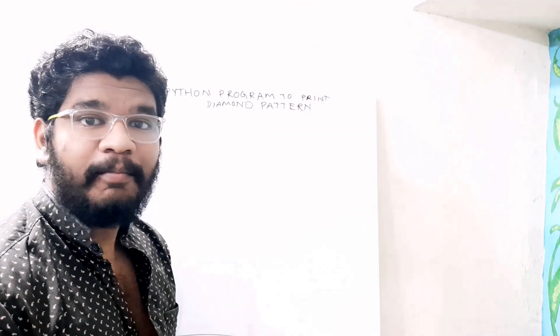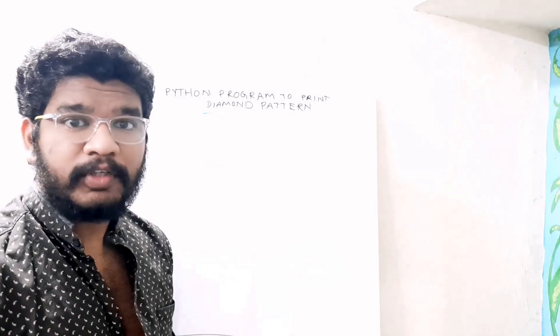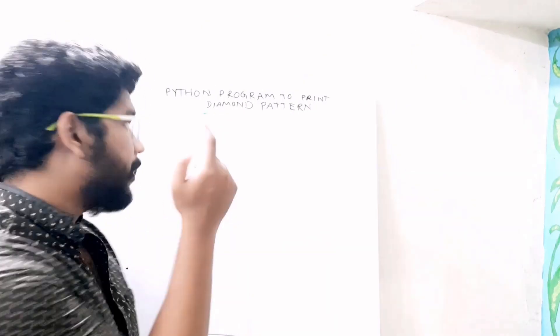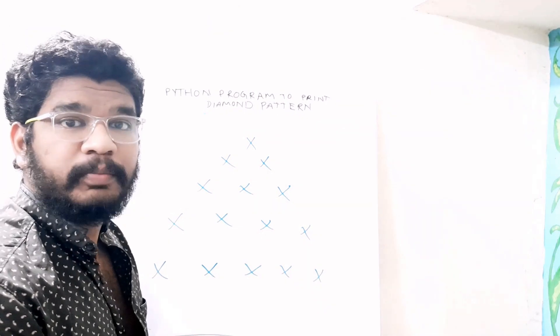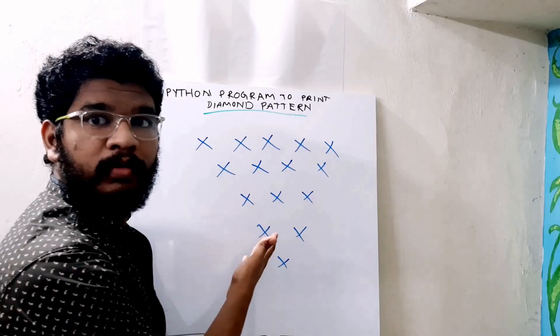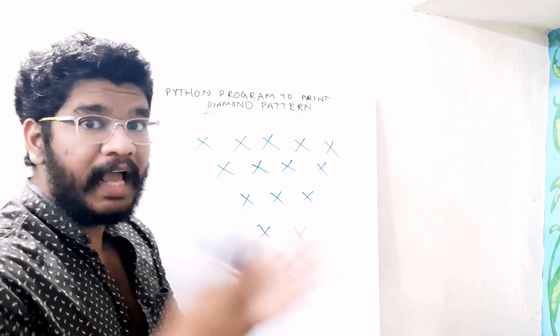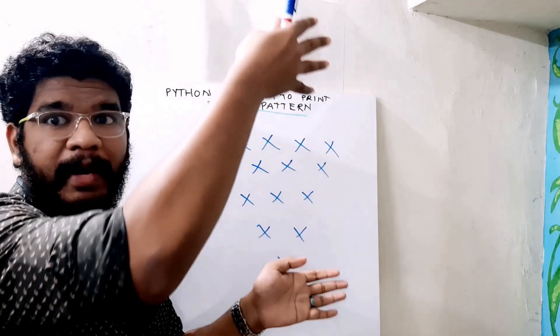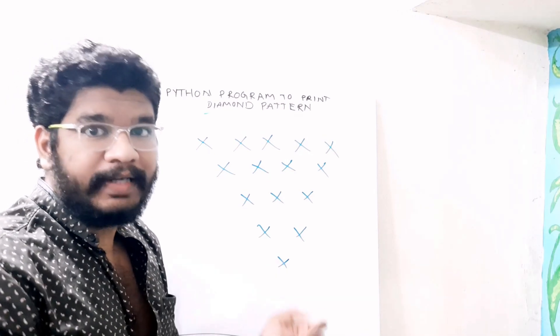Hello everyone, welcome back to programming in python.com. I am back with another video. Here I am going to tell you how to print a diamond pattern. In the previous videos, I told you how to print a pyramid pattern and also a reverse pyramid pattern. Here I am going to combine both and print a diamond pattern. So there will be a pyramid pattern and below that a reverse pyramid pattern — combined, it's called a diamond pattern.